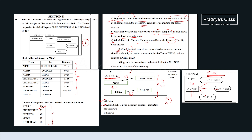Which fast and very effective wireless transmission medium should preferably be used to connect the head office at Delhi with the campus in Chennai? Compared to all other wireless transmission mediums, microwave is very efficient. The last question asks to suggest a device or software to be installed at the Chennai campus to take care of data security — and that is firewall. Firewall is a software which acts as a security guard, keeping track of incoming and outgoing traffic in the network. It is very easy to cover these five marks.